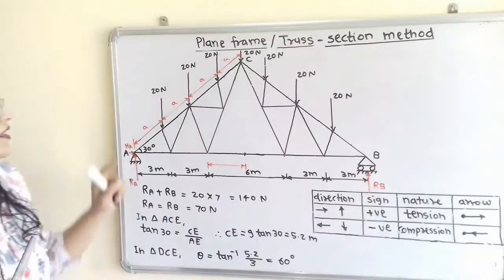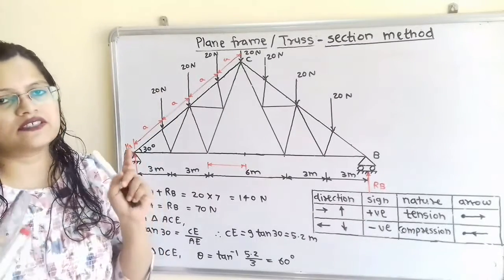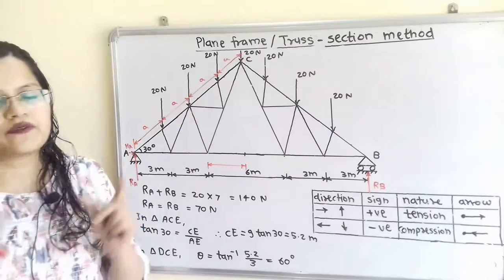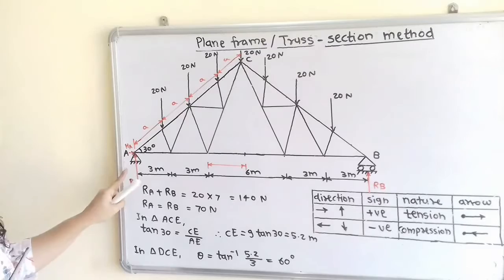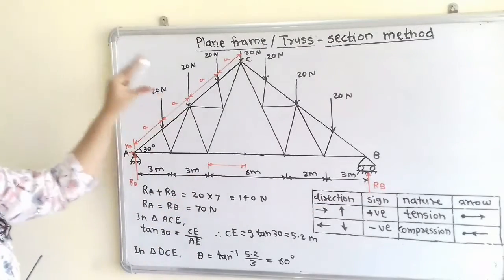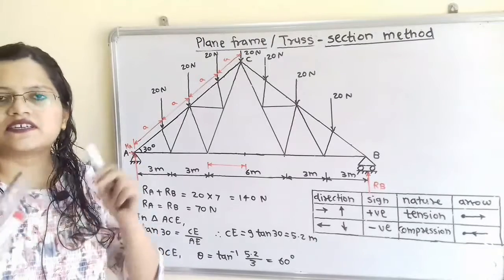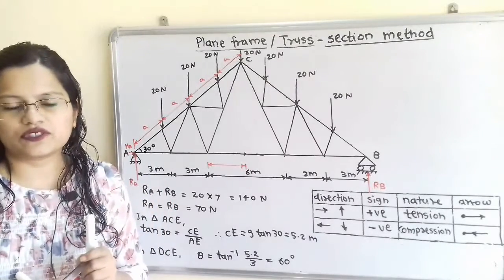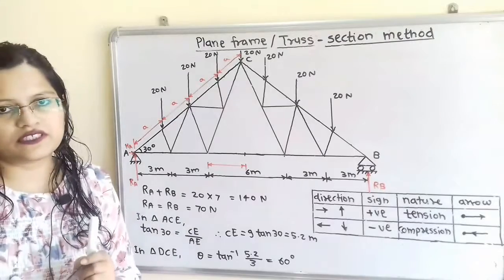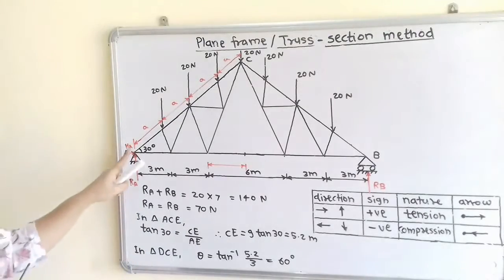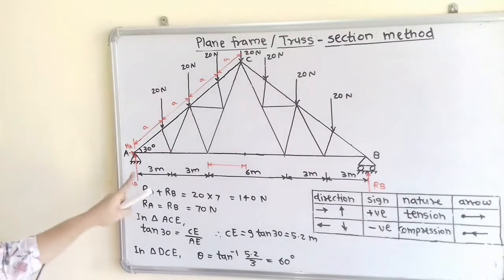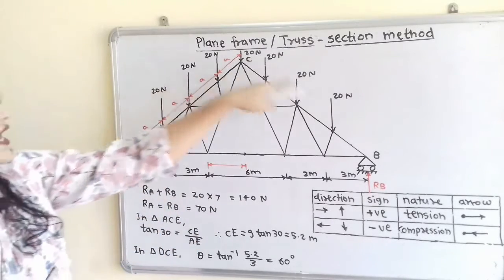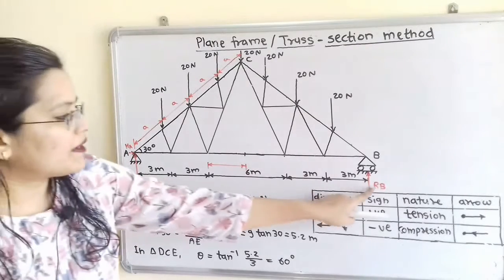Now we have to find the unknown reactions at points A and B — that is RA, RB, and HA. There are 20 N forces placed on the truss which are equally spaced, meaning the spacing between each 20 N force is the same. We will find RA and RB by considering the equilibrium of the whole system. Taking the summation of all vertical forces equal to 0, with upward forces positive and downward forces negative, we get RA plus RB.